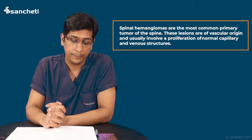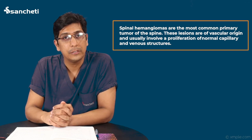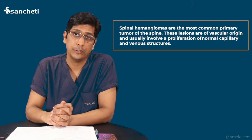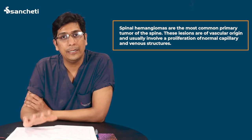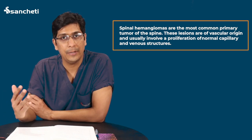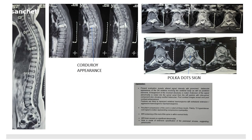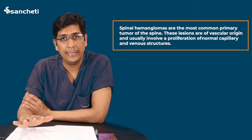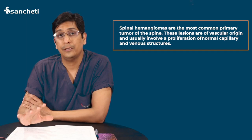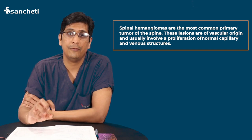Hemangiomas are the most common primary tumors of the spine. They are benign tumors and they have a vascular origin. It is a very common incidental finding. If you analyze 100 MRIs, 26 of those will have an incidental hemangioma. But 99% they are not symptomatic — only 1 to 1.2% of hemangiomas are symptomatic. They are primary vertebral spinal tumors with a vascular origin.